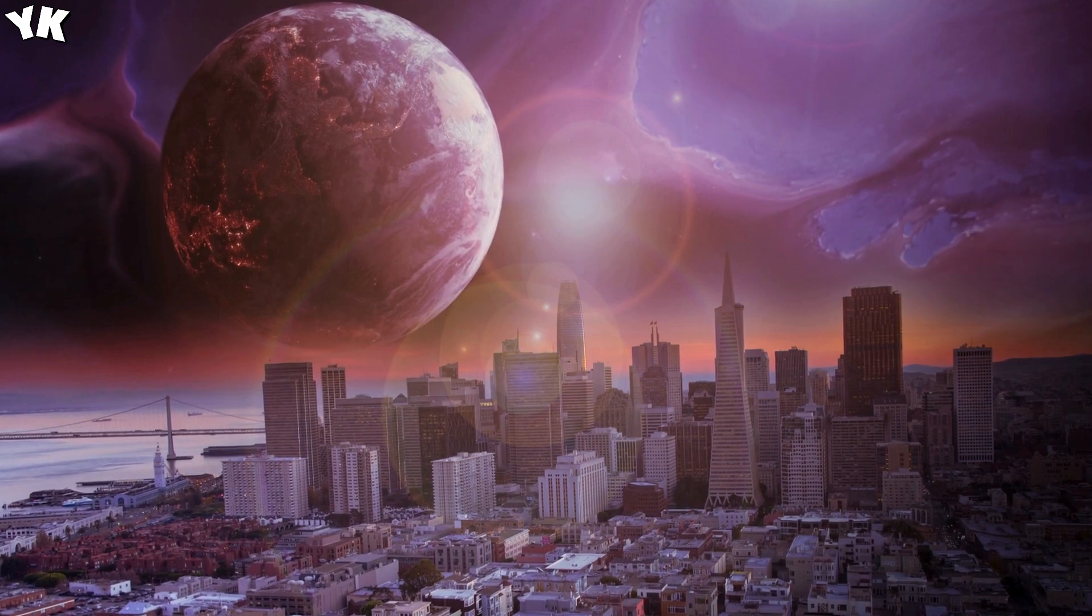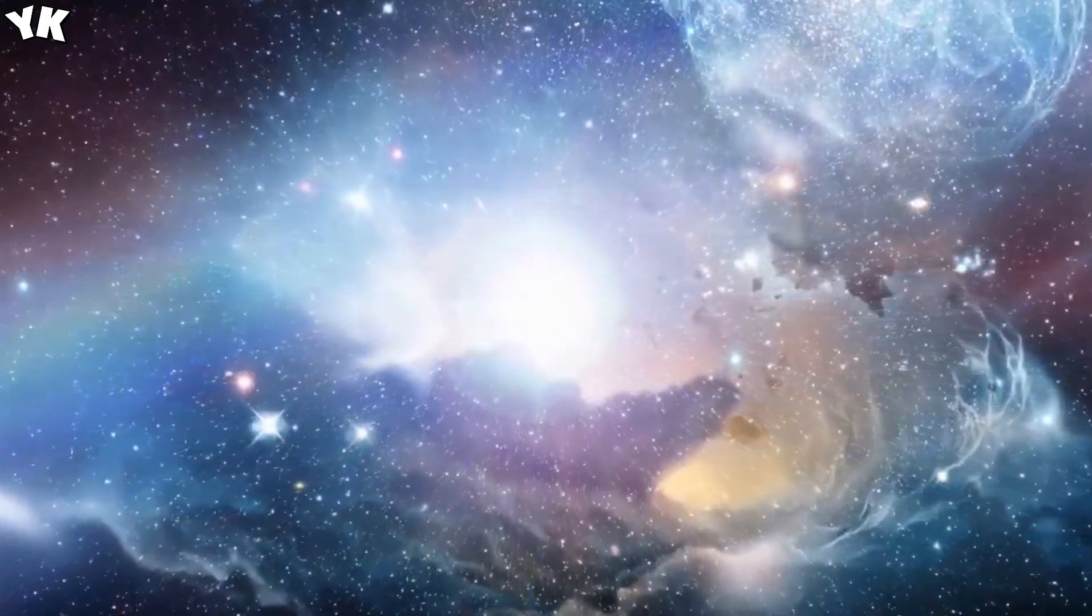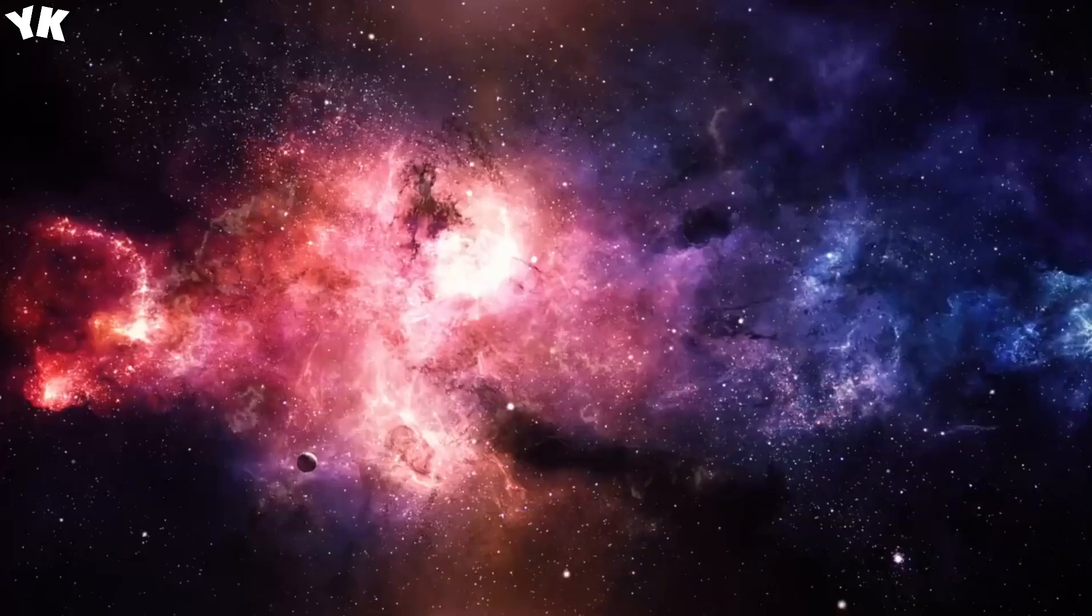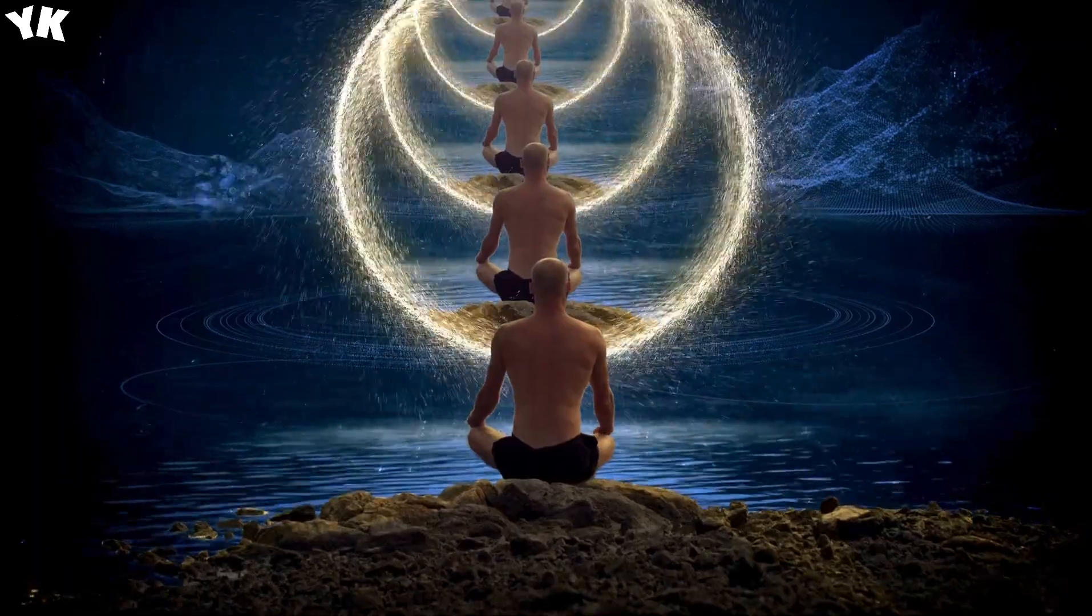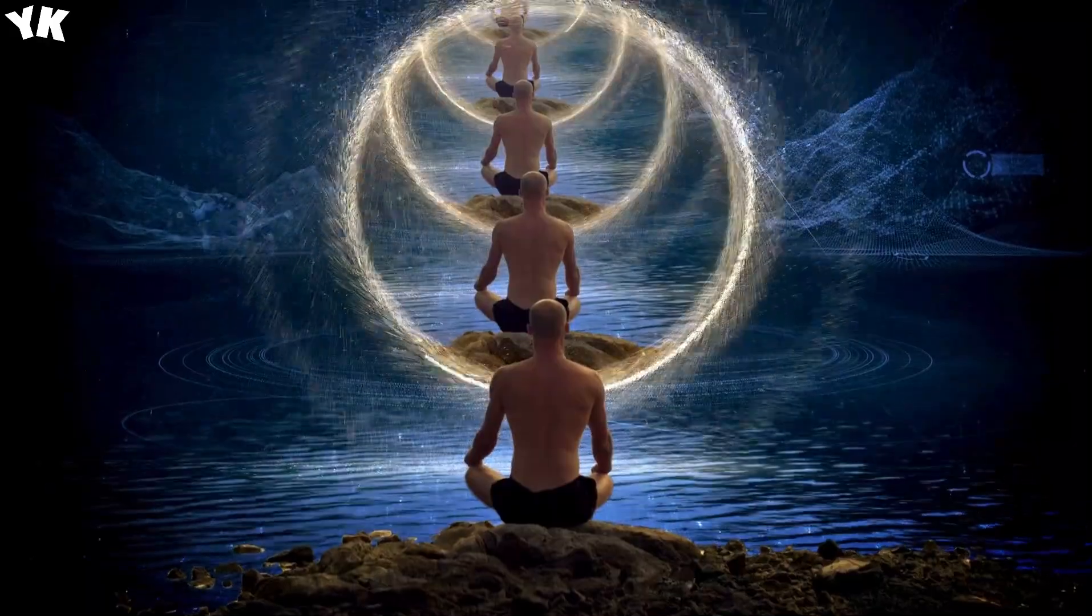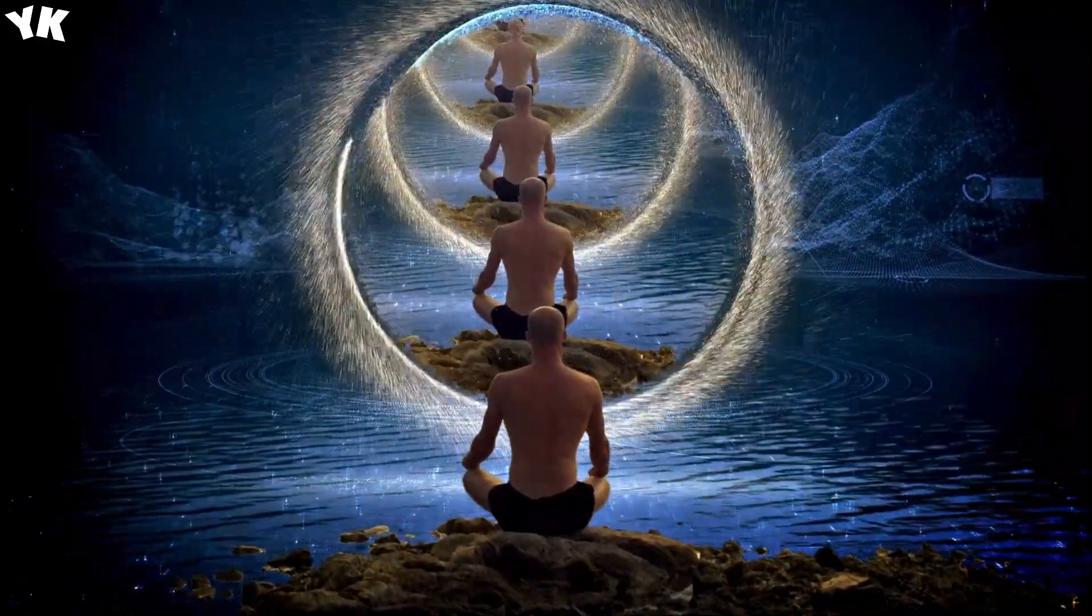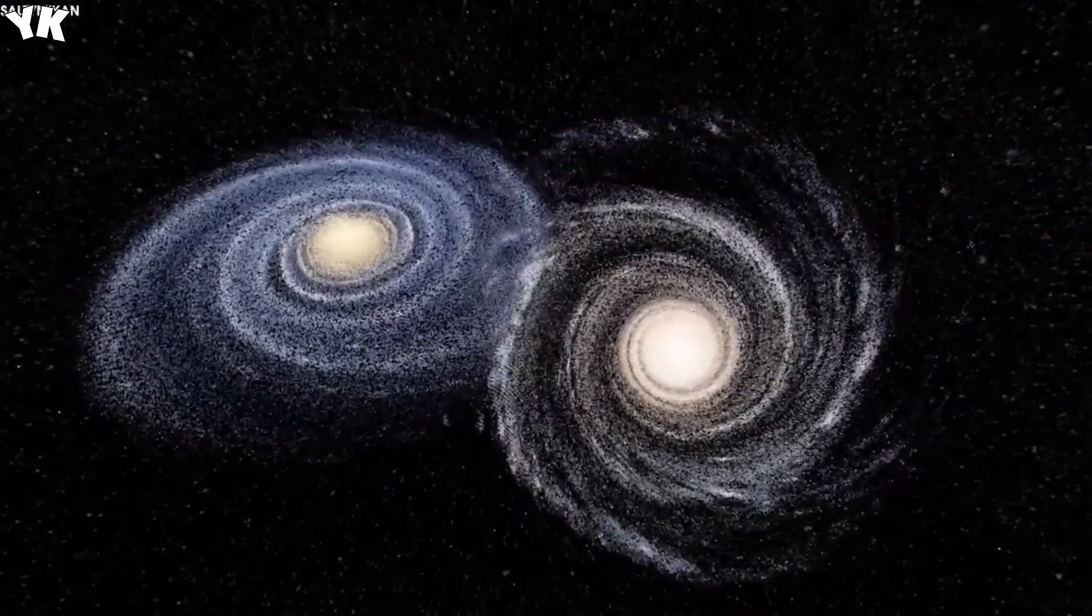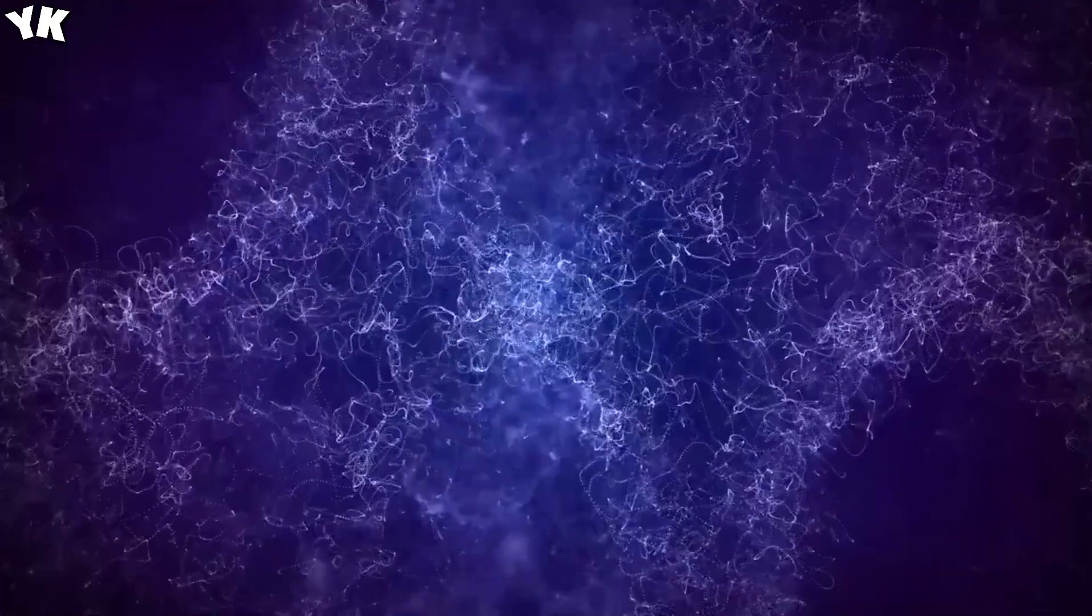The journey toward the James Webb Telescope's groundbreaking discoveries traces back to the Space Telescope Science Institute in 1985. At that time, the Hubble Space Telescope was still years away from launch, but visionary leaders like Riccardo Giacconi saw the need to plan for the future. Giavalisco, then Deputy Director at STScI, recalls the discussions about what would come after Hubble, leading to the conception of the next generation space telescope, later renamed JWST. The NGST was envisioned to overcome the limitations of Hubble by observing in the infrared spectrum. This capability would allow it to peer deeper into the universe, capturing light from galaxies that had been stretched into the infrared due to the expansion of the universe.